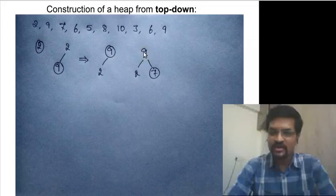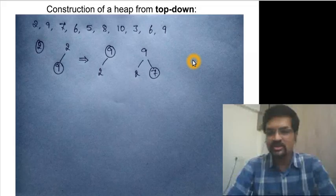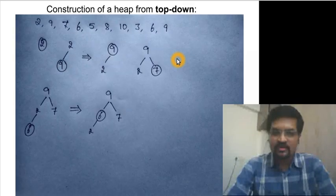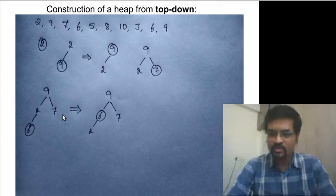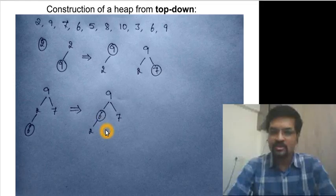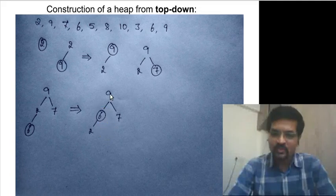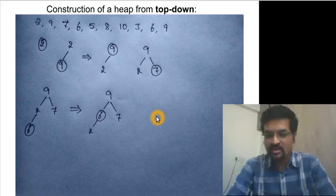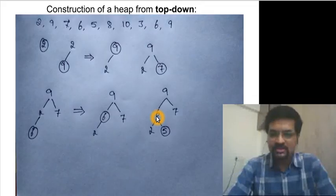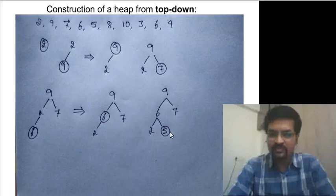For key 7, the parent is already larger so no swap is needed. The next element is 6, which needs to swap with 2 since 6 is greater than 2, but it doesn't swap with 9 because 9 is greater. Next, key 5 is inserted and no swap is needed — the heap property is already satisfied.